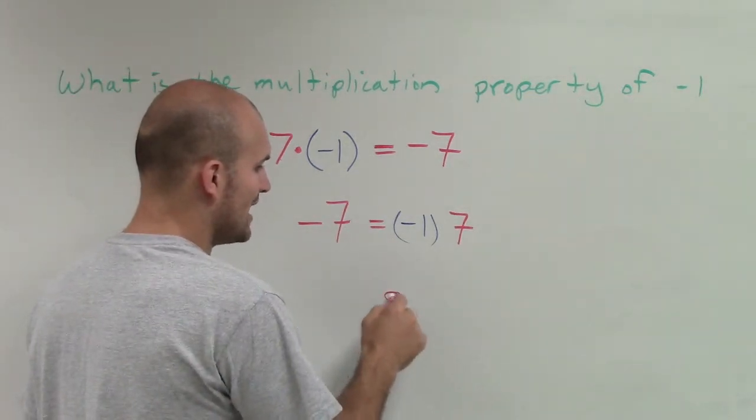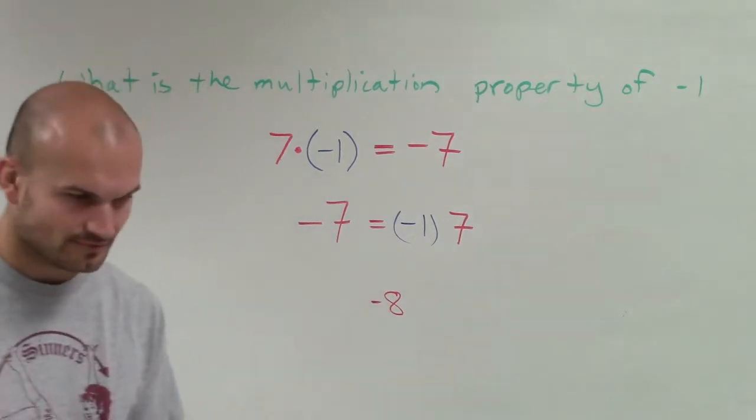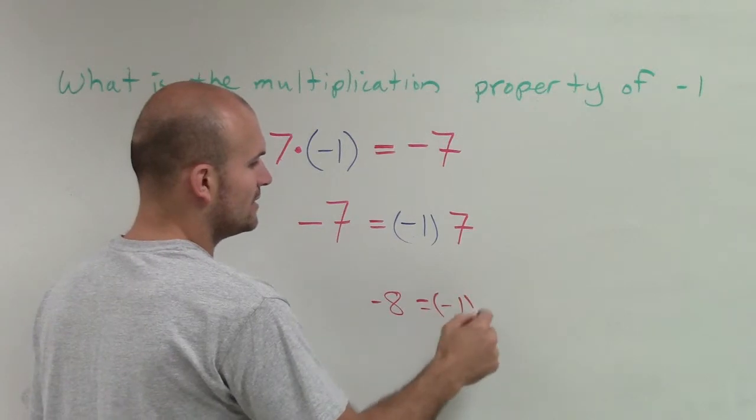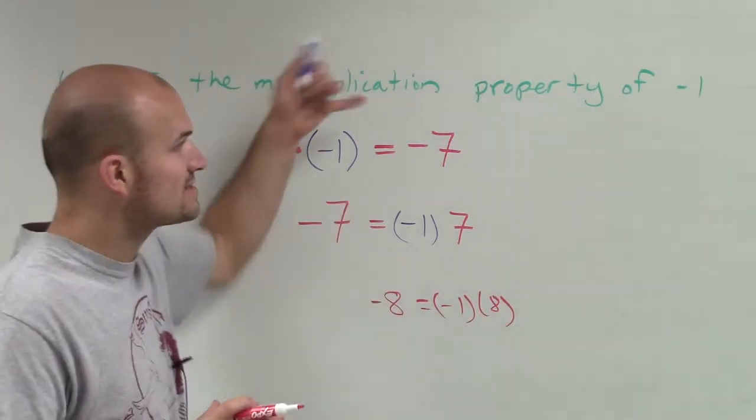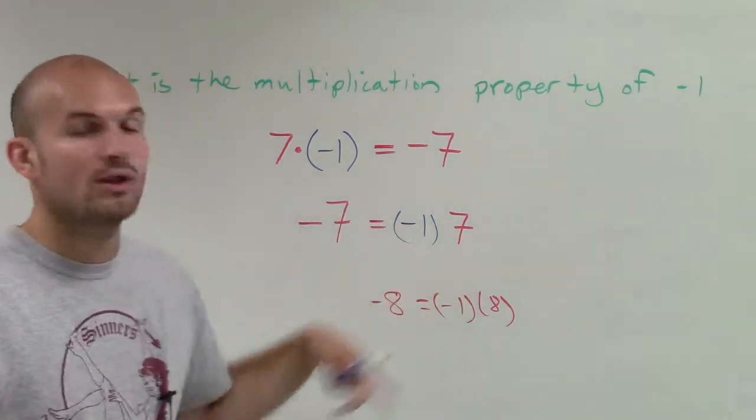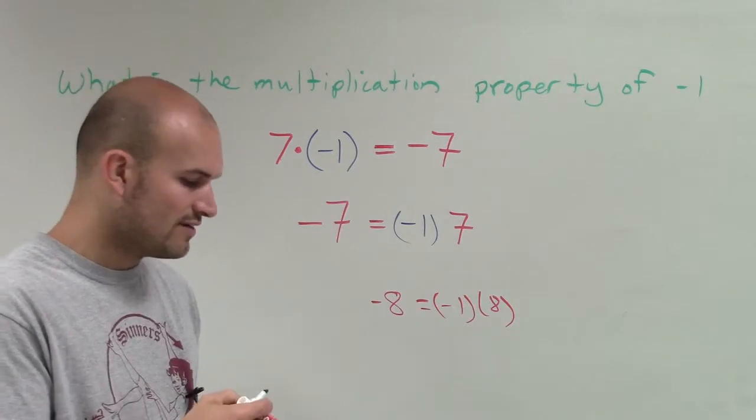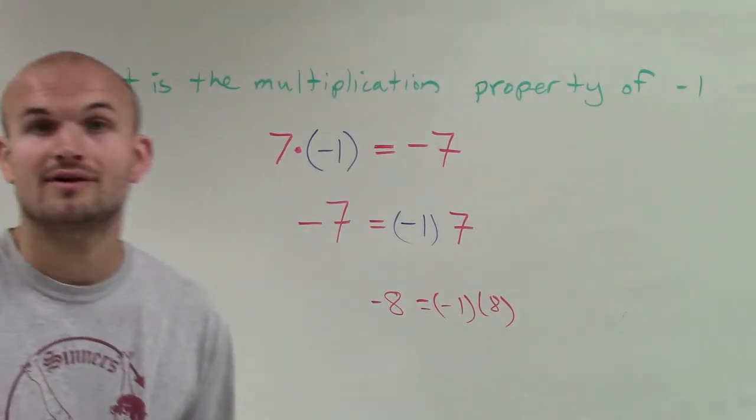When we have a number like negative 8, what that means is I can rewrite that as negative 1 times 8. It's very important for us to understand this property that we can pull out that negative 1. So we can see that there's really a negative 1 in front of all those negative numbers. So that is the multiplication property of negative 1.